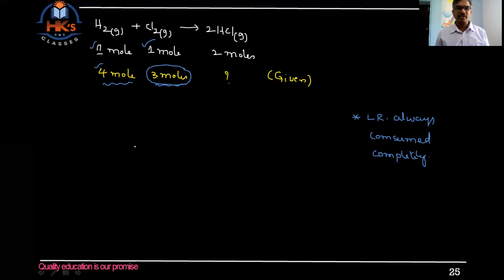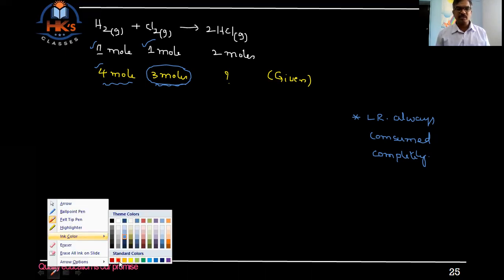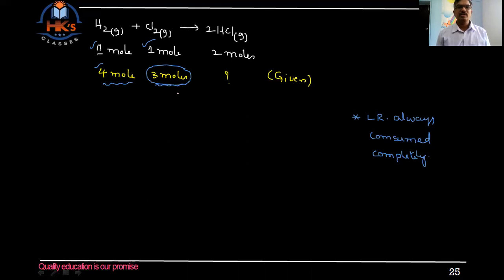Therefore, we can conclude that chlorine is the limiting reagent and hydrogen is the excess reagent, because the chlorine is completely consumed.